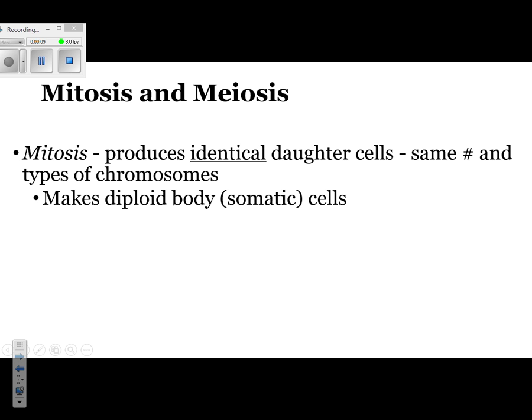Mitosis refers to the process of cell division. This is a type of cell division that produces identical cells — meaning the same number and the same types of chromosomes. This type of cell division is responsible for making somatic, or body, cells.